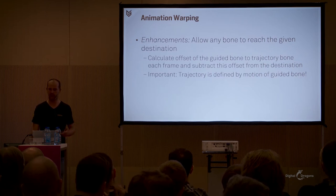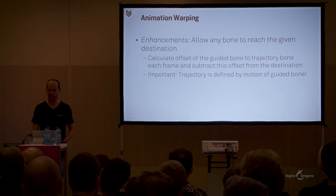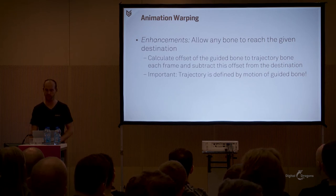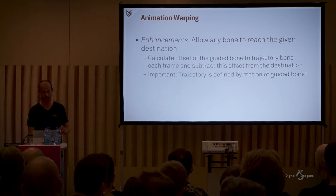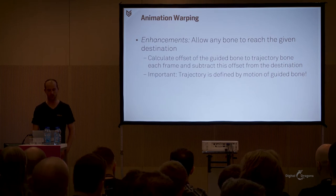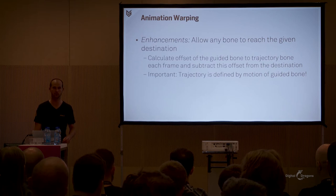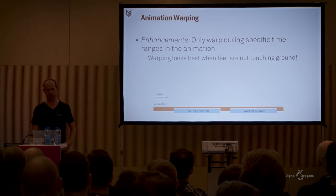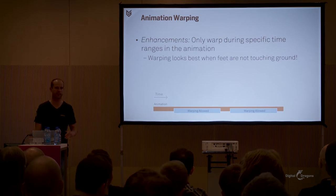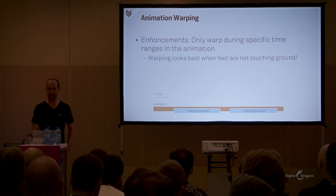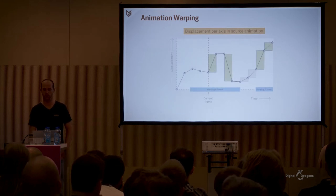We improved this basic warping technique with several enhancements. During vault warp motions, we needed to make sure hands are placed exactly on the obstacle shape. We extended our warping logic to allow any bone to reach a given destination — done by calculating the offset of the hand bone to the trajectory bone at any point in the animation and subtracting that offset from the destination position. Another enhancement is to warp only during specific time ranges using animation events. For example, when both feet are still on the ground, you don't want to enable warping yet as this will introduce foot sliding. Multiple events are allowed in one animation clip, and if the animation event isn't active in a frame, we don't take that displacement into account when calculating remaining displacement.